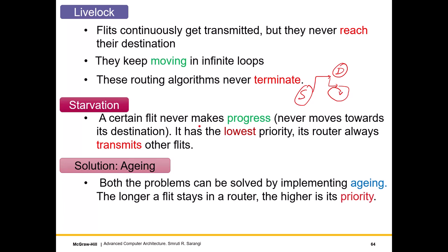Starvation is when a certain flit never makes progress — it is just stuck in a router and never moves toward its destination. In other words, it has the lowest priority. Its router always ignores it and in its place transmits other flits continually.